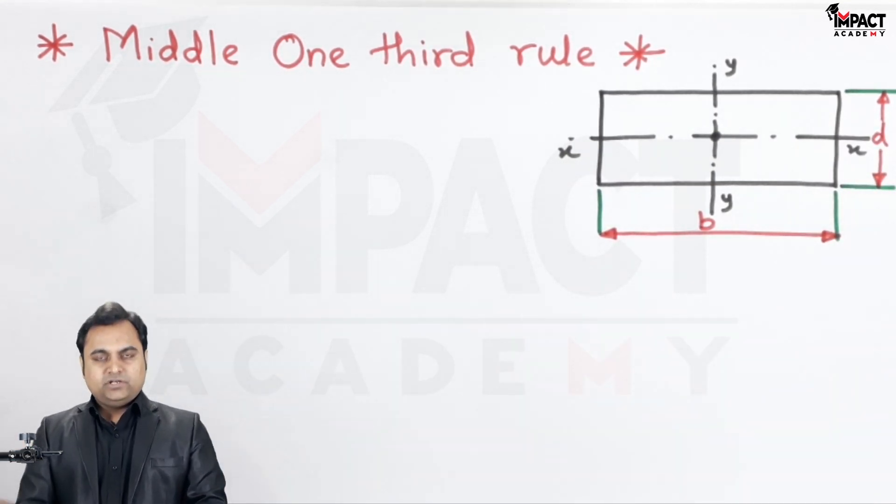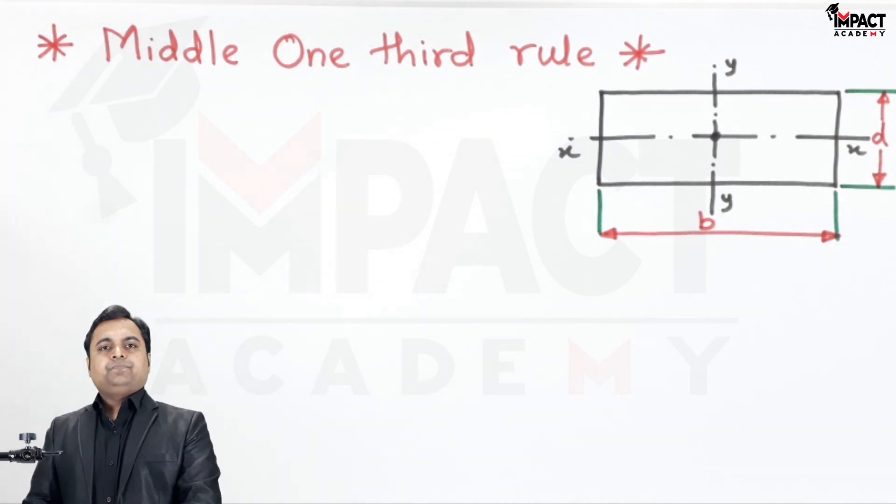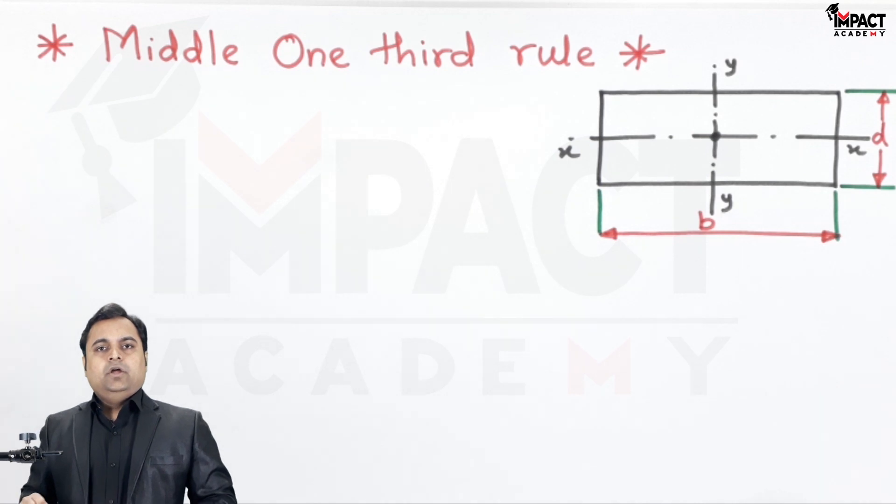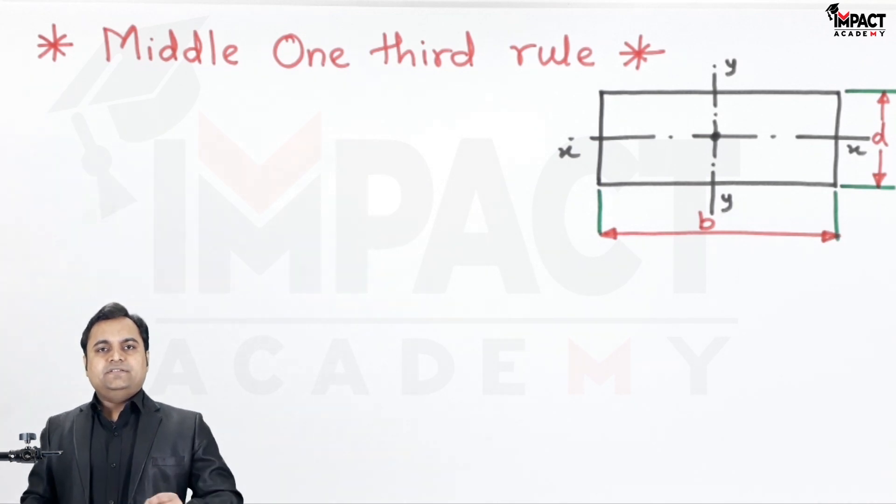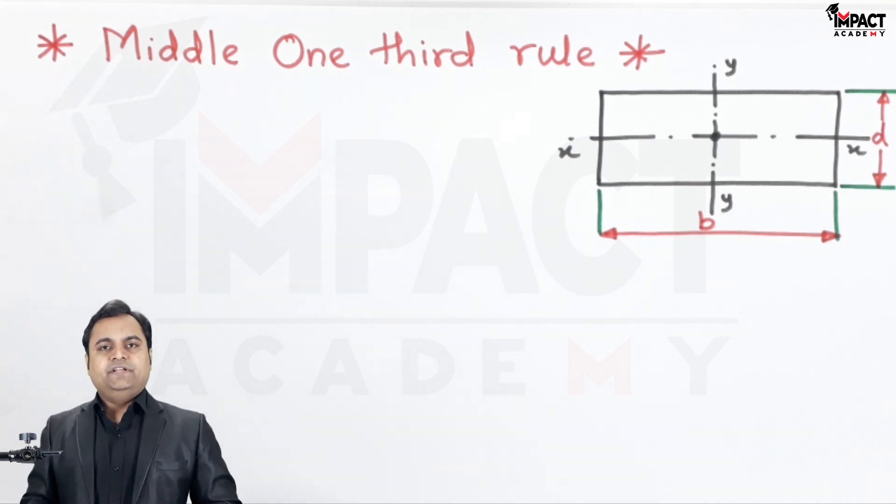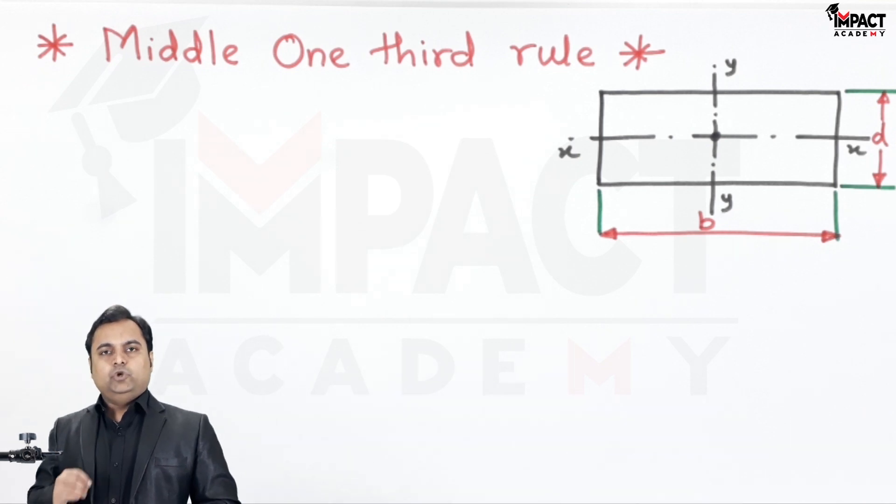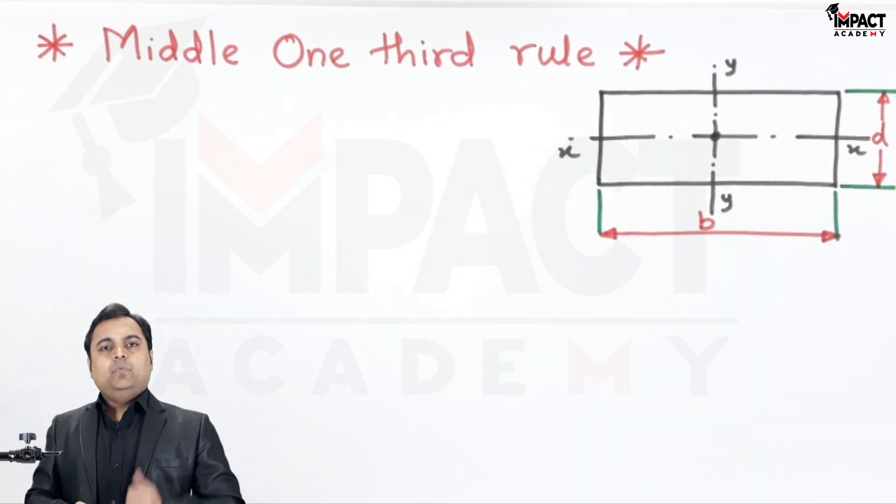Now middle one-third rule would be indicating an area at the center of this rectangle, and that area is the location for the eccentricity. That is, if we place the load anywhere in that area we are going to get no tension in the section for this column.